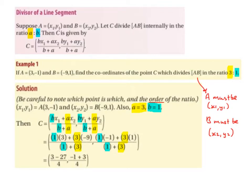Next, we just have to multiply. So 1 multiplied by 3 is 3. 3 multiplied by -9 is -27. 1 plus 3 is 4. Comma. 1 times -1 is -1. 3 times 1 is 3. And 1 plus 3 is 4.